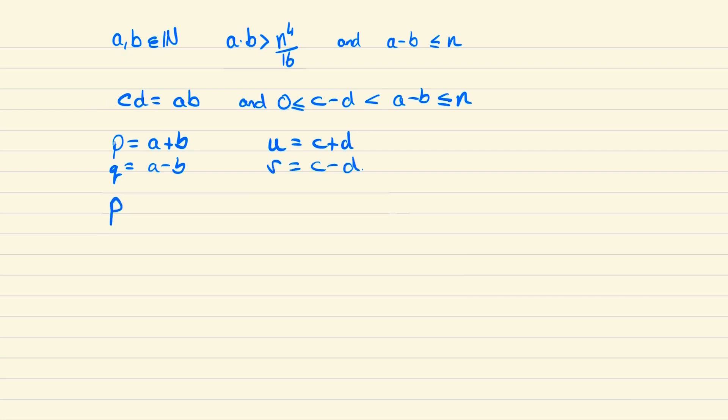If we then consider p squared minus q squared which is just a plus b squared minus a minus b squared which simplifies to be 4ab and given that we know ab equals cd we can write this as 4cd.